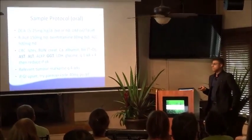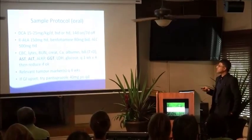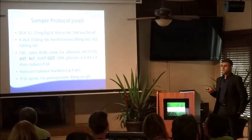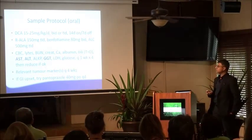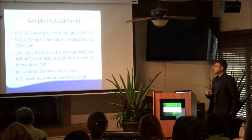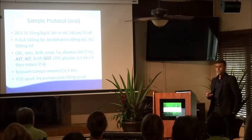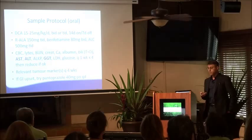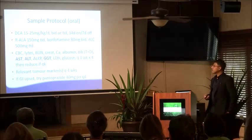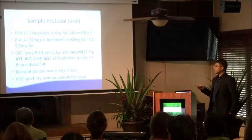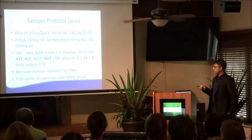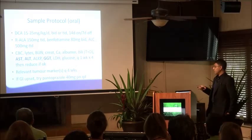Here is the oral protocol we use. Depending on the patient's age and general condition, we use 15 to 25 milligrams per kilogram per day. In the original Michalakis study they started at 25 mg/kg and worked up to 50 mg/kg — double our dosing — which is likely why patients dropped out with severe side effects like early neuropathy or severe sedation and fatigue. Combining natural medicines delays or prevents many DCA side effects. We do routine blood work — mainly monitoring liver enzymes and tumor markers to assess response. An antacid is used if there's stomach upset.